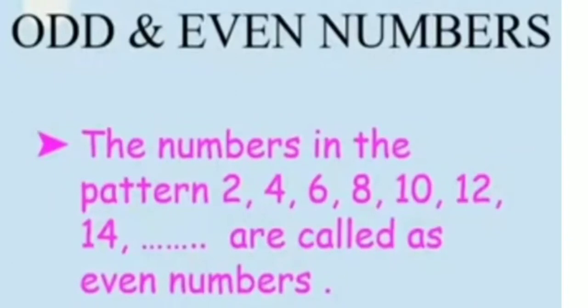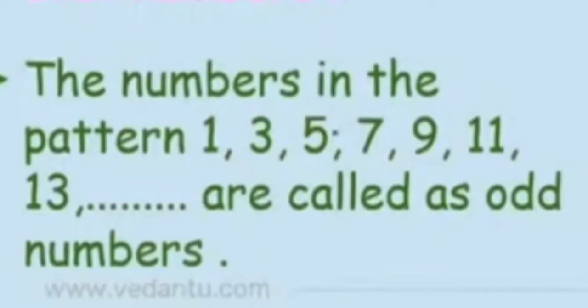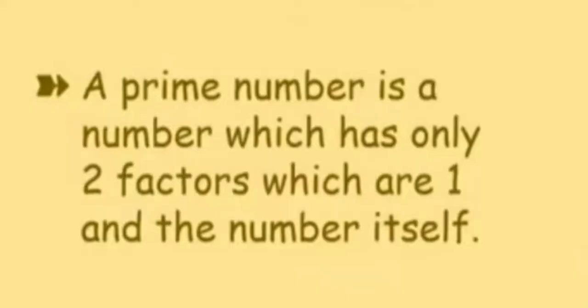Now odd and even numbers. The numbers in the pattern 2, 4, 6, 8, 10, 12, 14 are called even numbers. The numbers in the pattern 1, 3, 5, 7, 9, 11, 13 are called odd numbers. Next is prime numbers.